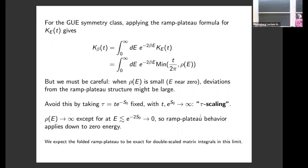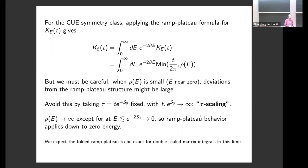For the GUE symmetry class we can write a formula for k_beta as follows: k_beta is obtained by integrating k_E(t) over energy weighted by a Boltzmann factor. Applying the naive ramp-plateau formula for k_E(t) — the minimum of t/2π and rho(E) — gives a reasonable guess for k_beta(t). However, near zero energy the density of states is very small and fluctuations around the ramp-plateau structure may be large. To get around this complication, we take a tau scaling limit, fixing the ratio of t and e^{S₀} and sending both to infinity.